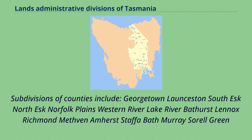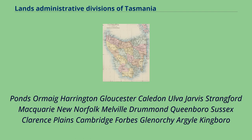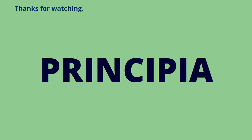Subdivisions of counties include: Georgetown, Launceston, South Esk, North Esk, Norfolk Plains, Western River, Lake River, Bathurst, Lennox, Richmond, Methon, Emerson, South of Bath, Murray, Sorrel, Green Ponds, Macquarie, Harrington, Gloucester, Caledon, Alva, Jarvis, Strangford, McCrory, New Norfolk, Melville, Drummond, Queenborough, Sussex, Clarence Plains, Cambridge, Forbes, Glenorchy, Argyle, and Kingborough.